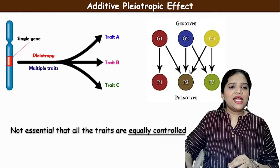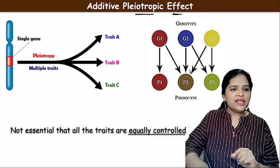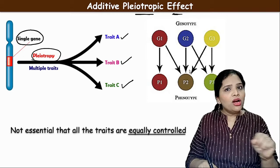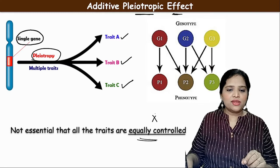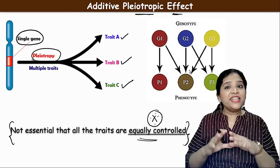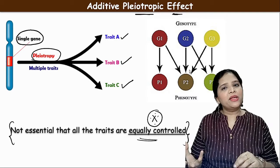What is the additive pleiotropic effect? Generally, a single gene controlling different characters is called pleiotropic. However, it is not always the case that all characters of an organism are equally controlled. One gene may control different characters, but it is not essential that all characters are controlled equally — sometimes one character will be controlled less and another more. This is called the additive pleiotropic effect.